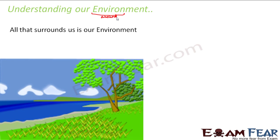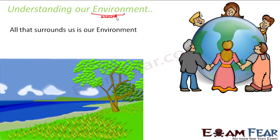No one can exist in isolation. Here we will talk about the various components which actually form the environment. We will also see how, with development and each passing year, our environment is being threatened by human activities, and what is the need for us to take care of it. Basically, first we will talk about what makes up the environment — the different components that form it — wherein we will talk about ecosystem. That is a new term, but from the next slide onwards, we will talk about ecosystem in detail.